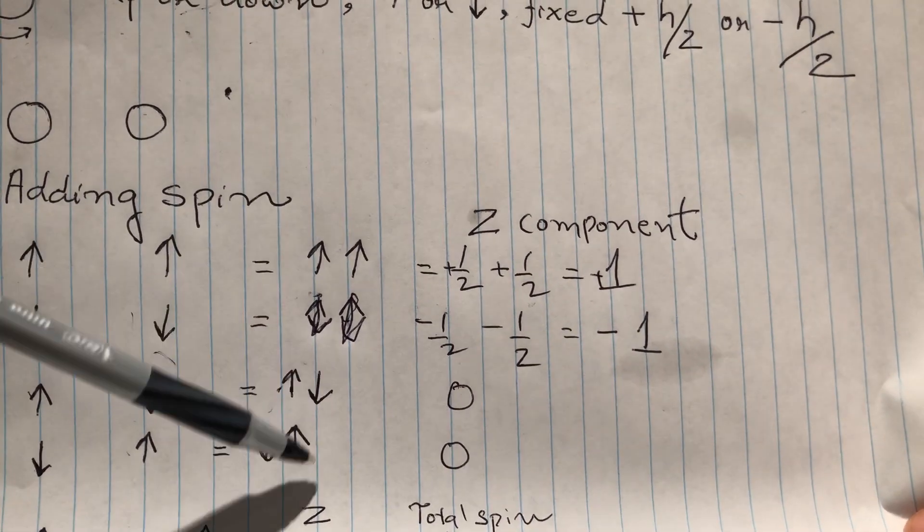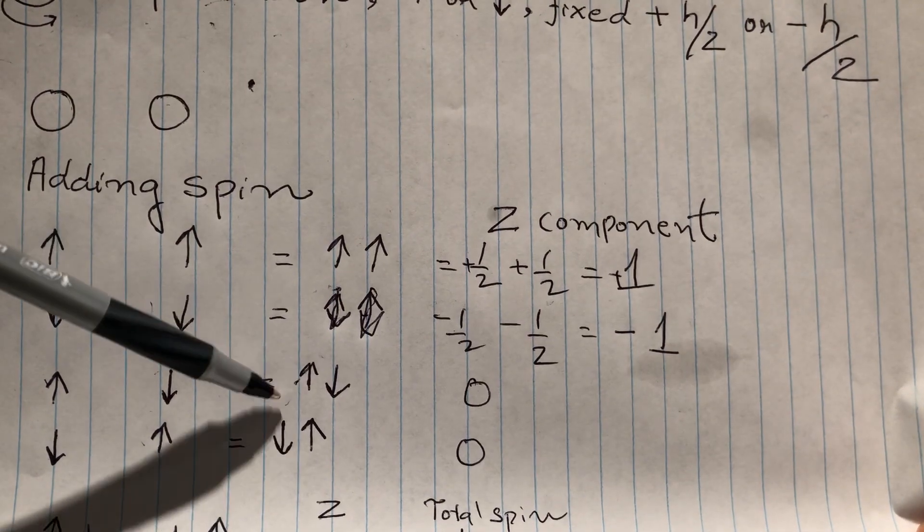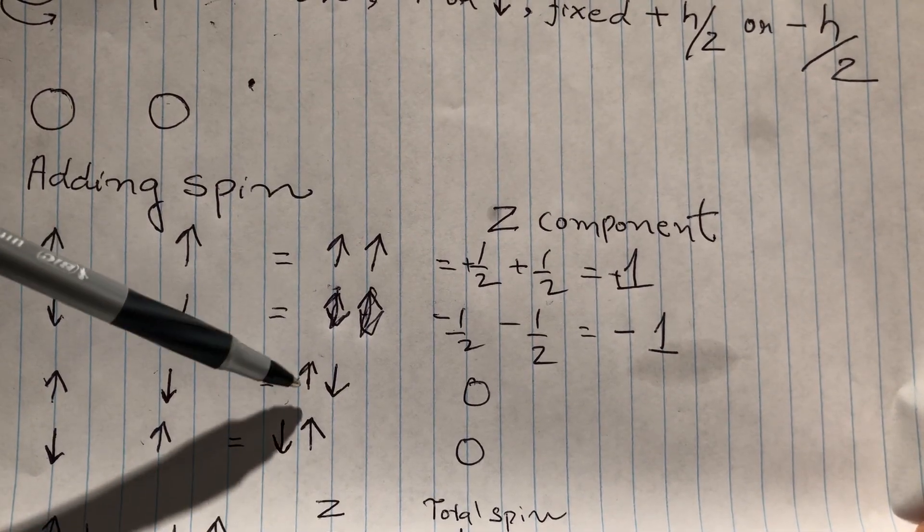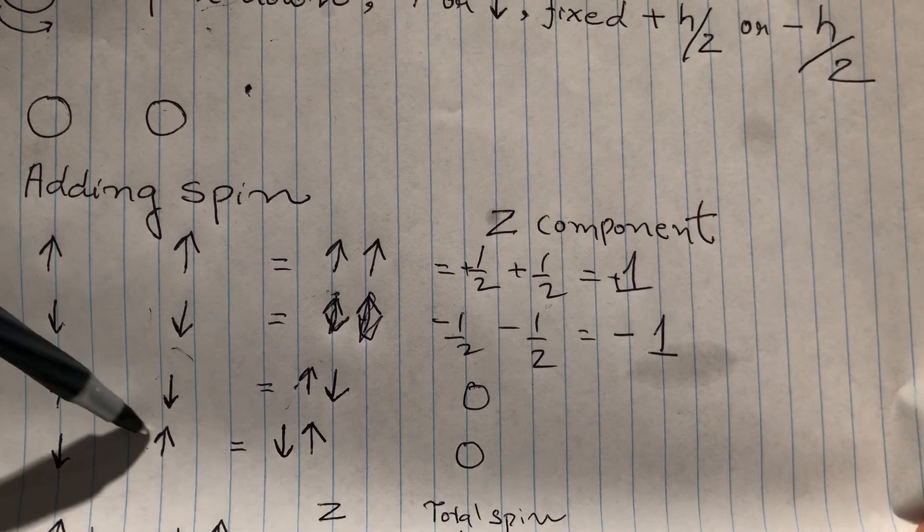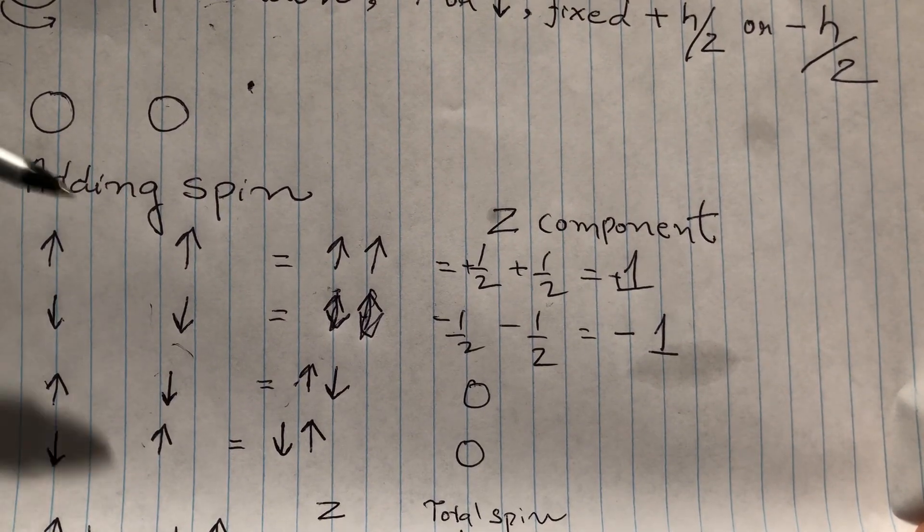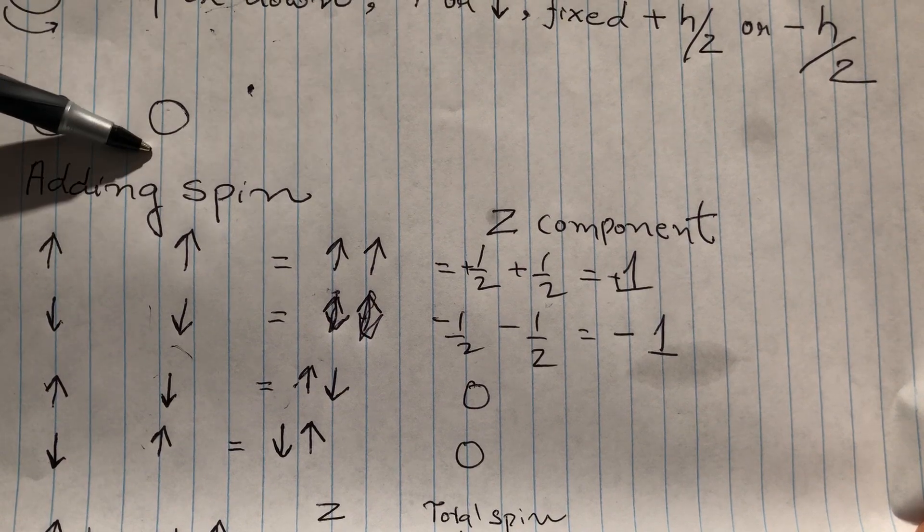These two states are wrong. The reason they are wrong is that you're assuming that you know that this is electron one and this is electron two. You will say, obviously, we know that this is electron one and this is electron two.